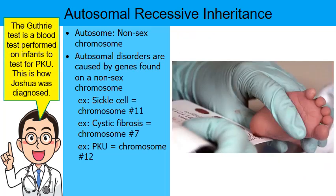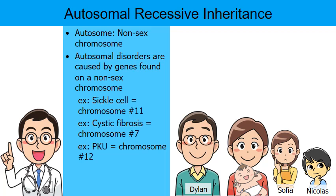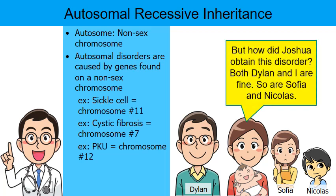The Guthrie test is a blood test performed on infants to test for PKU — this is how our cartoon baby Joshua was diagnosed. Mrs. Henderson wants to know how Joshua obtained this disorder. Both Dylan and she are fine, and so are their other children Sophia and Nicholas, who don't have PKU. So how did Joshua obtain this disorder?